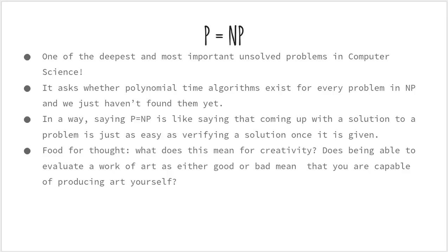Now we have seen a set of NP-complete problems. A quick recap: we started off with 3SAT. We reduced 3SAT to independent set to show independent set is NP-complete. We reduced independent set to clique to show that clique is NP-complete. For vertex cover, we reduced independent set to vertex cover to show that vertex cover is NP-complete. Then we reduced vertex cover to dominating set and showed that dominating set is NP-complete.